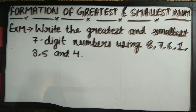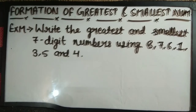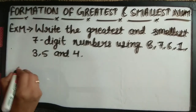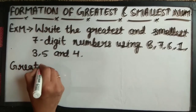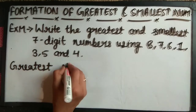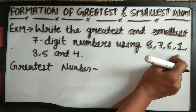So let's solve it. Students, first of all, I would like to tell you one thing. To get the greatest number, we arrange the given digits in the descending order. If we create the greatest number, we write the digits in descending order.